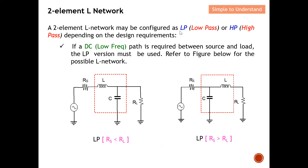A two-element L network may be configured as either low pass or high pass depending on the design requirement. I've previously covered low pass and high pass filters — the link is under the description. These two concepts are very similar, and correlating those videos with this one will deepen your understanding of impedance network design.